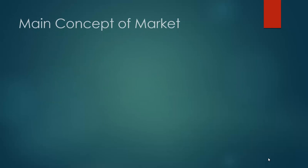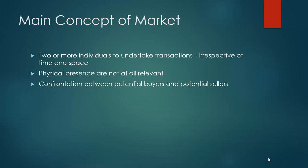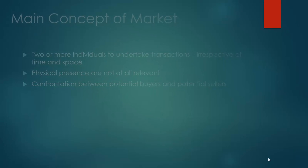When two or more individuals undertake exchange transactions, a market is established irrespective of time and place. The physical presence of buyers and sellers is not at all relevant in the economist's conception of market. Due to the development of modern modes of communication based on computer technology, physical presence is not required for establishing a market. What is more relevant is that there must exist two groups of transactors who are willing to undertake exchange transactions. The essential characteristic of a market is the confrontation between potential buyers and potential sellers, making bids and offers in the process of determining the terms at which exchange would take place.